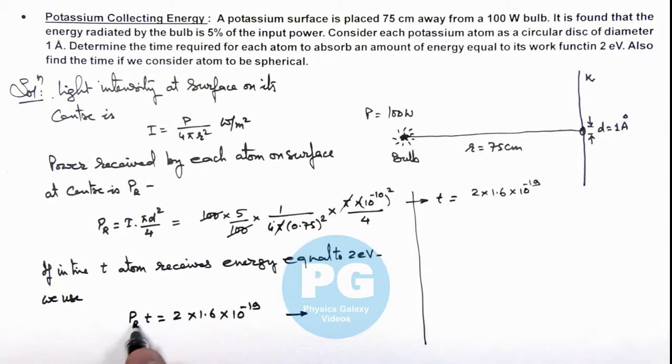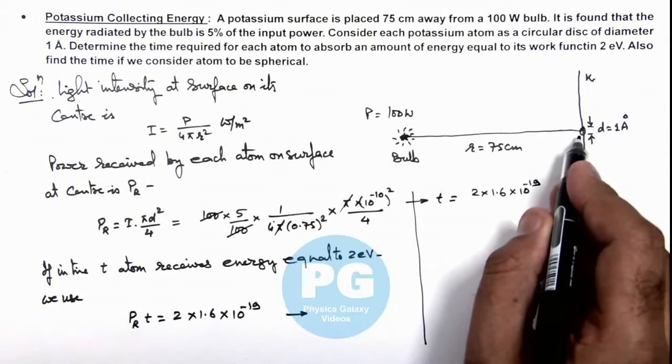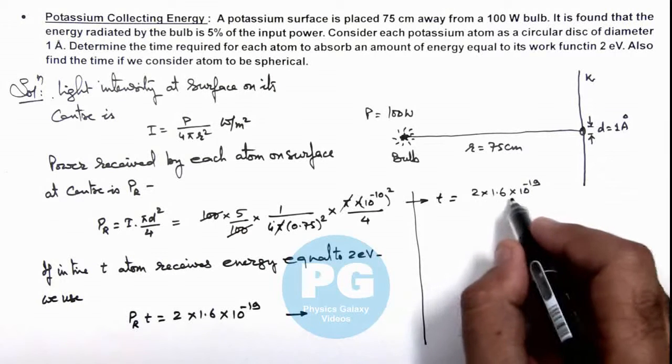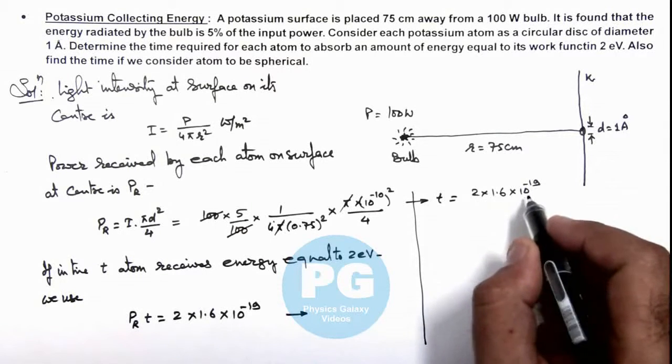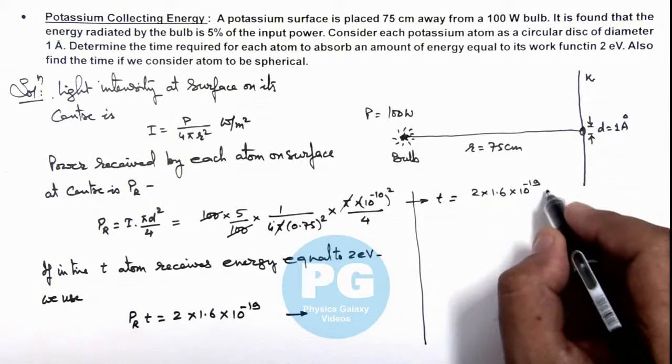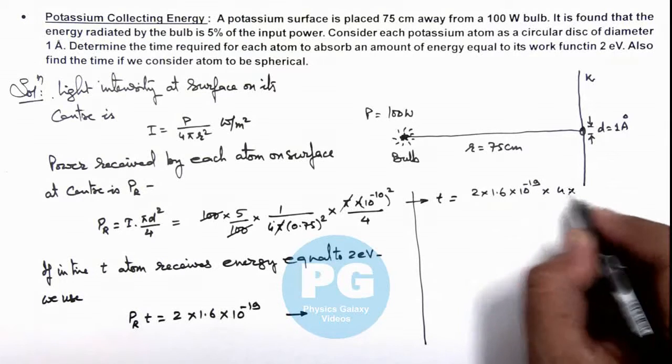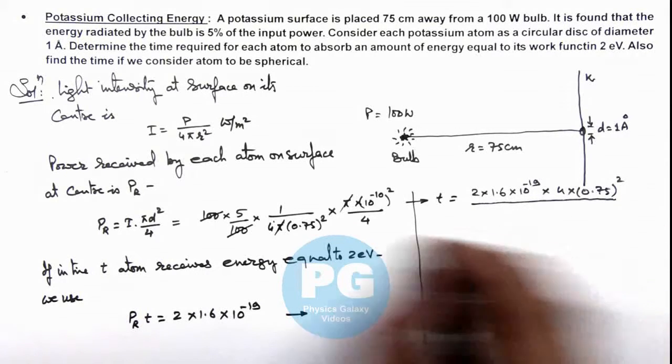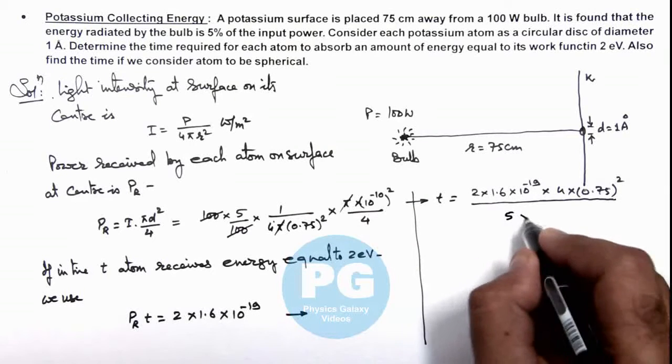This can be further written as (2 × 1.6 × 10⁻¹⁹) multiplied by (4 × 0.75²) divided by...